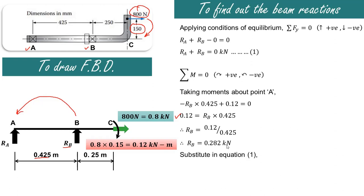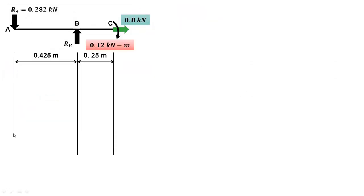Substituting RB into equation 1, RA equals 0 minus RB, so RA equals minus 0.282 kilonewton. The negative sign indicates that RA acts downward, not upward as assumed. So RA is shown acting downward and RB acts upward, both of magnitude 0.282 kN. Using these values we now draw the shear force diagram.